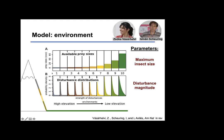This is a spatially explicit model. We examine habitats from high to low elevation as prey size increases from very small insects at higher elevations to the largest insects in the lowland tropical rainforest. We have 10 different environments with increasing insect size and, simultaneously, increasing disturbance — the greatest disturbance occurring in the lowland tropical rainforest.